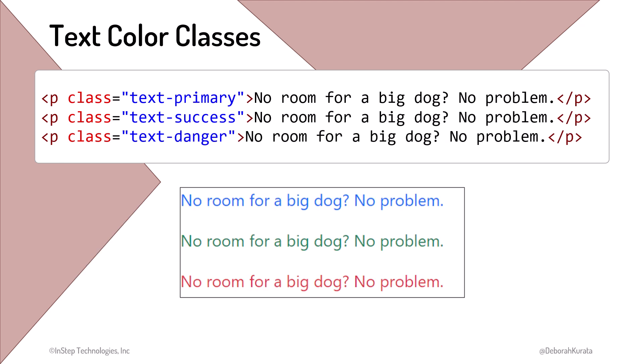There are color utility classes for coloring text. We saw the set of Bootstrap colors in the documentation earlier in this course. Here are some examples. TextPrimary is blue. TextSuccess is green. And TextDanger is red.